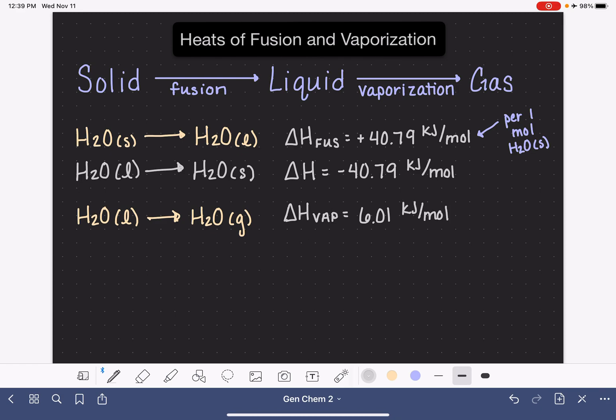This is referring to one mole of liquid water. We could also use this to understand the change in enthalpy for the reverse process. So if we have a gas that is going to a liquid, the change in enthalpy for this process, and it doesn't get a special subscript, just regular change in enthalpy, is just going to be opposite in sign. So this will be negative 6.01 kilojoules per mole, telling us that this is an exothermic process because we have a negative sign.